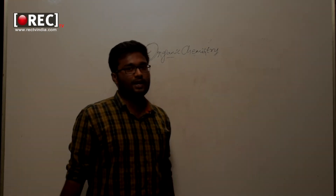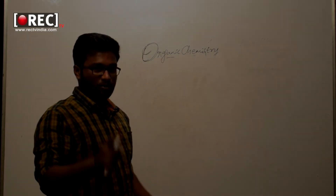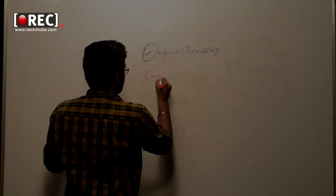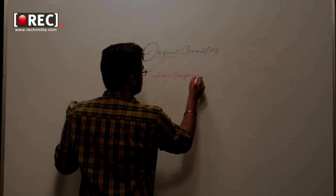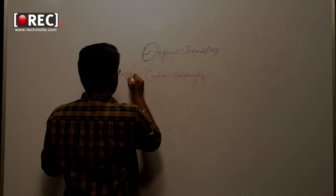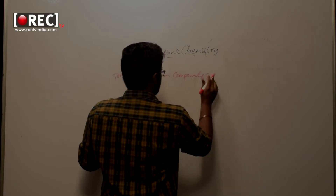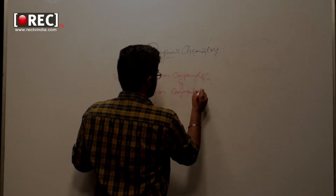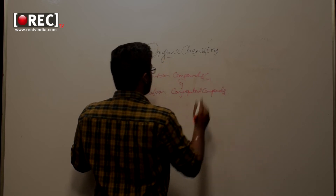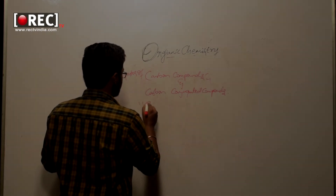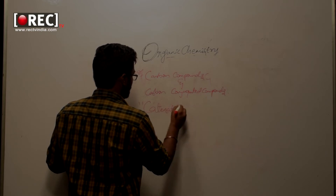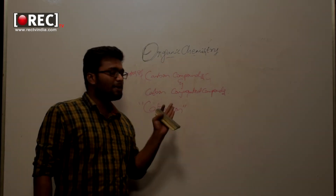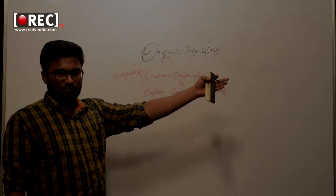In the previous class we discussed about the general introduction of organic chemistry. Now let's discuss this introduction in brief. Important points to note: organic chemistry is a branch of chemistry which deals about the carbon compounds, properties of compounds, and carbon conjugated compounds. Why does carbon have this kind of specialty? That's because of its property called catenation. Catenation can simply be defined as a property of an element to get bonded with the same element, thus forming chains — the chain-forming tendency or capacity of an element.